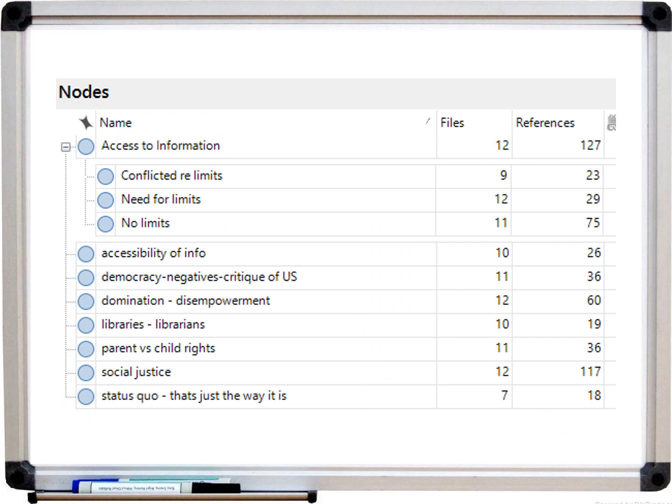As you do your coding, you are developing a coding scheme or coding tree that reflects the codes or theme nodes you've created and coded for, but also represents how many data files you've coded at a given node and how many individual passages of text or references in NVivo that you've coded at that given node.